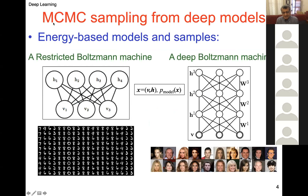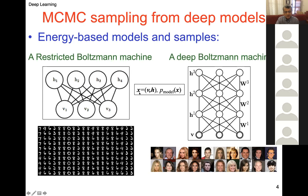In deep learning we construct models such as a restricted Boltzmann machine, which has visible units for the data and hidden units that capture some representation. We have a formulation where x equals v and h together — the v's and h's are random variables. When we say p-model of x, it's a probability distribution over the set of variables, assigning a probability to any given set of values, set by all the weights connecting them.